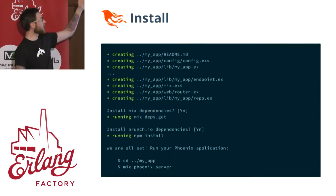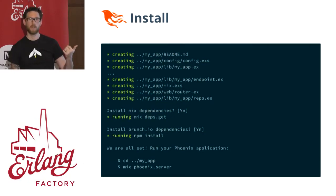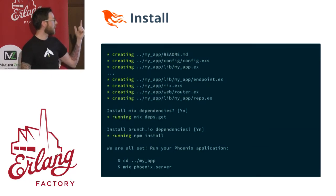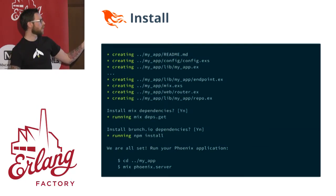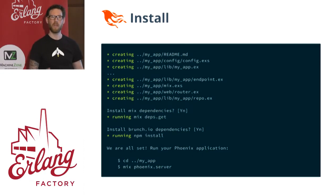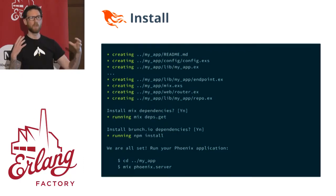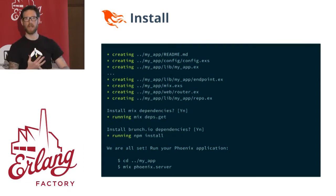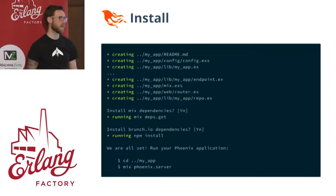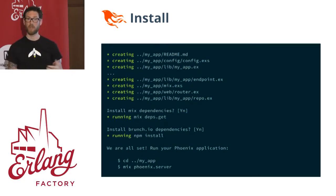What that looks like is this — it creates all the files and asks you some questions for installing different dependencies. We have the option of installing Brunch.io, which is an NPM node package that allows you to build your assets — your static assets like JavaScripts and CSS. It's an optional dependency, but it makes building your front-end assets really nice.